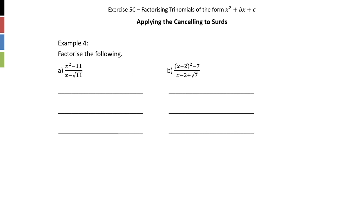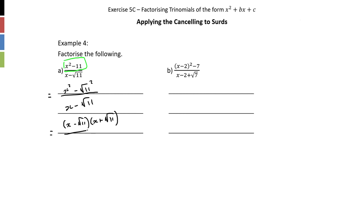If you see surds, don't freak out — there's probably a solution. We saw surds in the difference of perfect squares context. Looking at the top term: it's a square minus another term, so we can turn it into a difference of perfect squares. We write it as x^2 − (√11)^2 over (x − √11), use our shortcut to turn this into (x − √11)(x + √11) over (x − √11). The (x − √11) terms cancel, leaving x + √11.